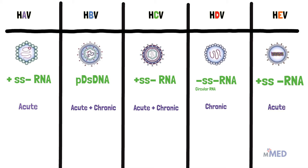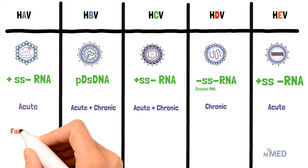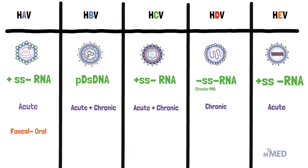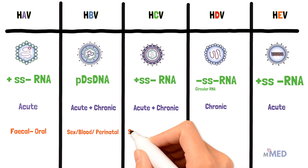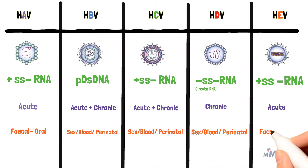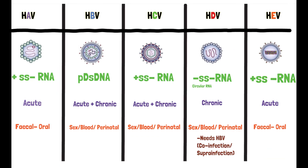There are certain situations in patients who are immunocompromised where Hepatitis E can cause chronic infections, but it's not that common. Both Hepatitis A and Hepatitis E are transmitted via the fecal-oral route — for example, if someone infected defecates into a water source and you drink it or eat from that source, you can become infected. In contrast, Hepatitis B, C, and D are transmitted through sex, blood, and perinatal modes. Perinatal means the virus can be transmitted from a mother to her baby. Hepatitis D can cause co-infection, where Hepatitis D and Hepatitis B both infect a cell at the same time.